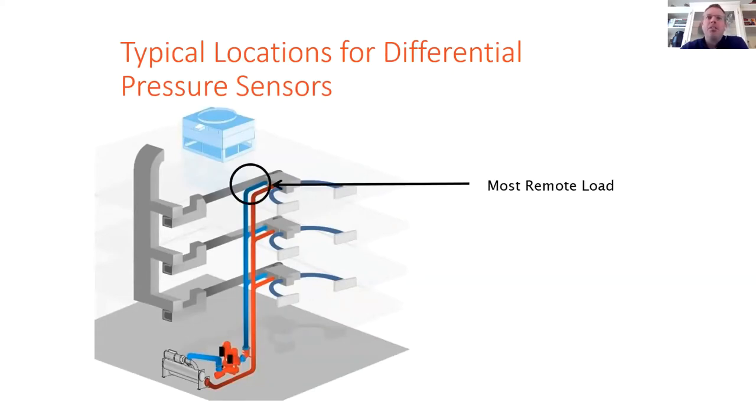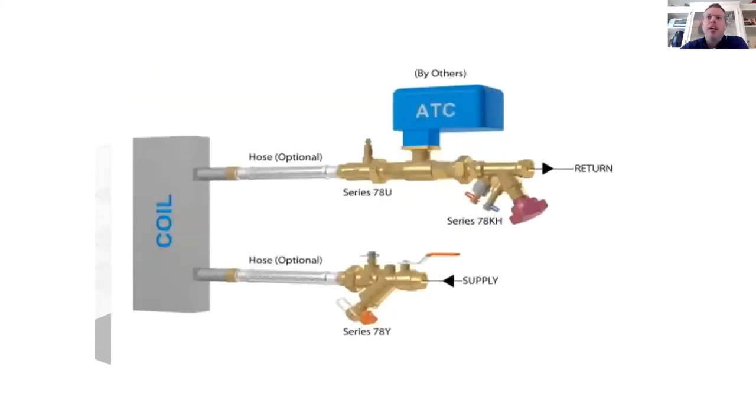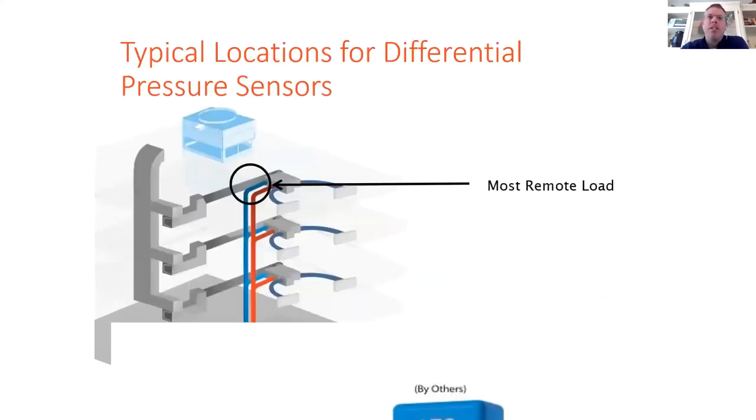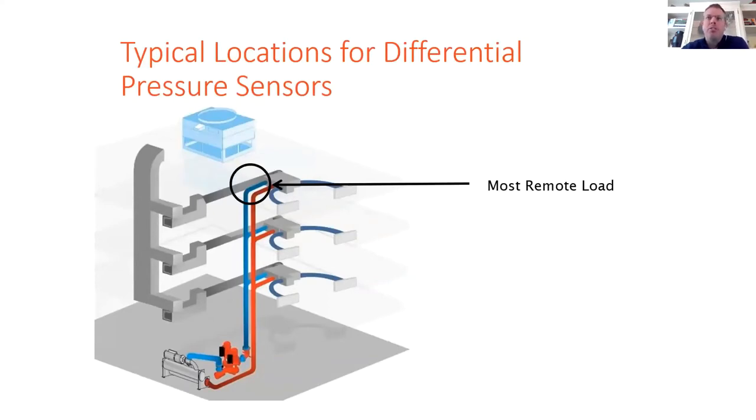The location of the differential pressure sensor is actually critical to the amount of energy that can be saved at the pump. The first and most ideal location is at the most remote load. So this is the load with the longest run of piping where the fluid is going to experience the most pressure drop before reaching the load. And the set point is typically the pressure drop needed to overcome the control valve, the strainer, the balancing valve, the coil, et cetera, and a short run of piping. This allows your minimum head set point to be low in comparison to the full flow head pressure set point and allows a great deal of pump turndown.